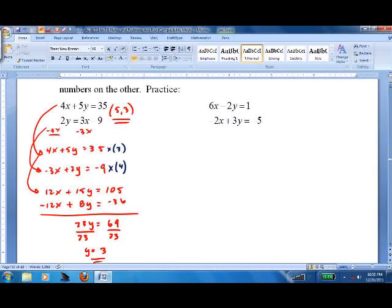We use the bottom equation, so we will check with the top equation. 4 times 5 plus 5 times 3 should equal 35. 20 plus 15 does equal 35. 35 equals 35.